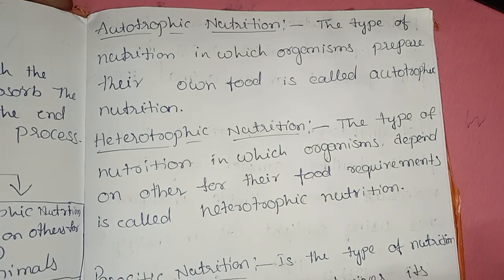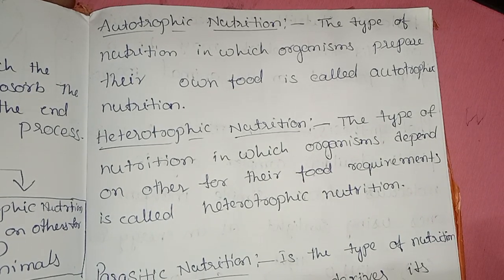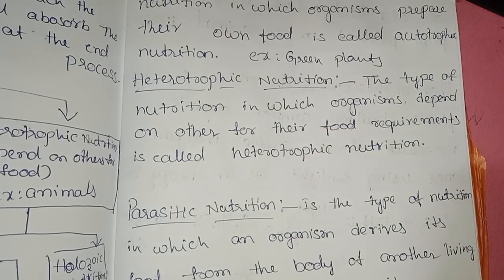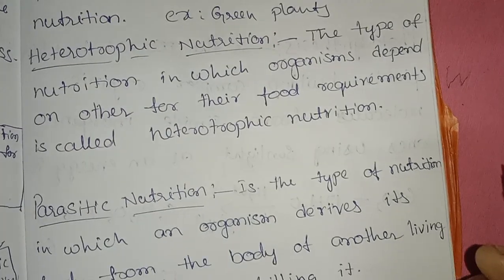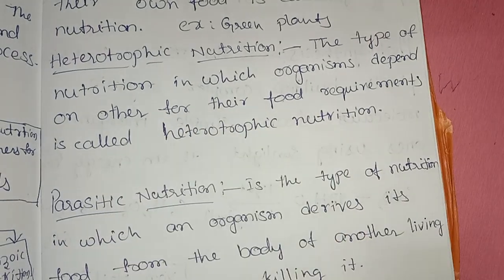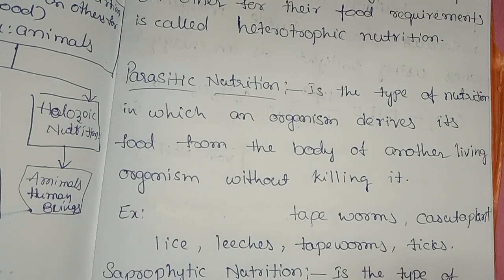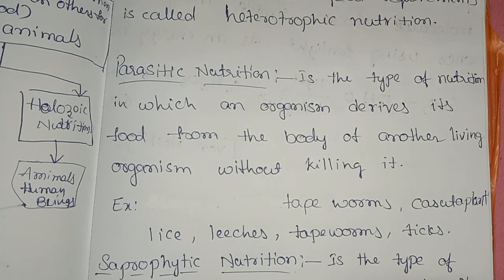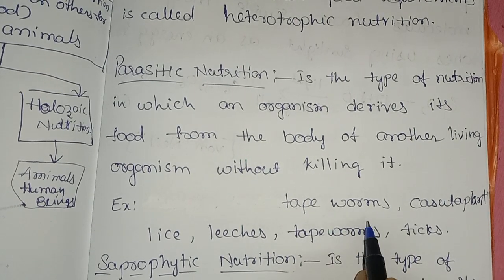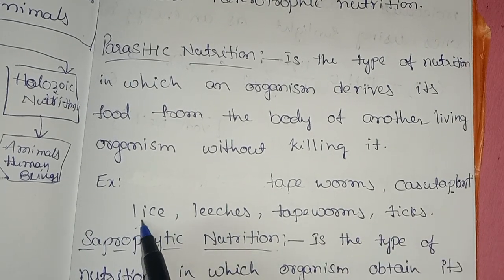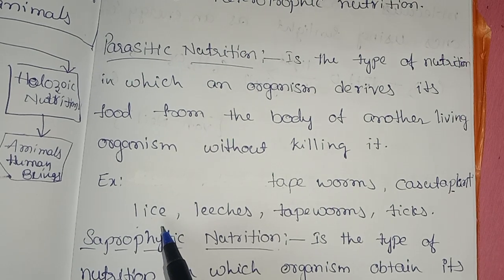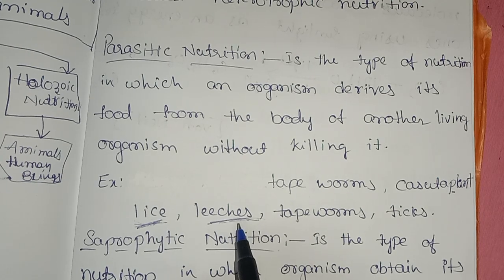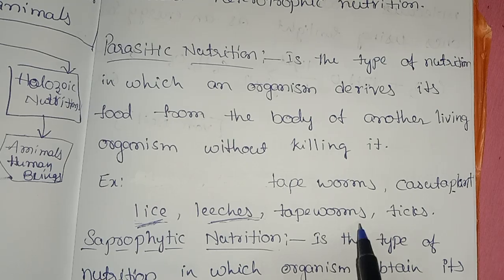To summarize the definitions: autotrophic nutrition — organisms prepare their own food; example: green plants. Heterotrophic nutrition — organisms depend on others for food. Parasitic nutrition — organisms derive food from the body of another living organism without killing it; examples: tapeworms, cuscuta plant, lice. Parasites directly absorb nutrients, such as leeches sucking blood from the human body.